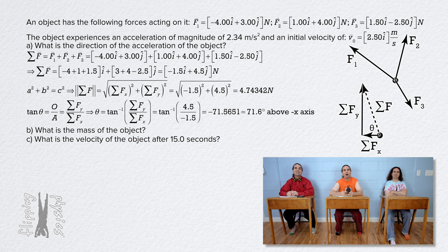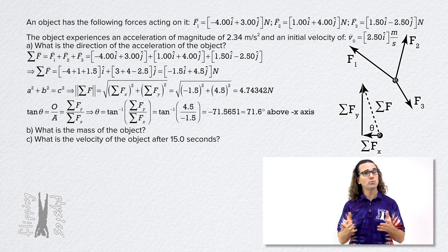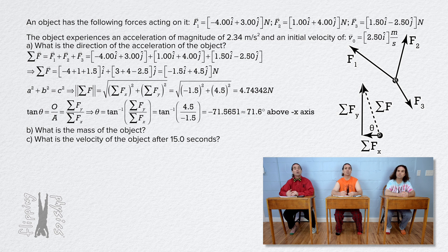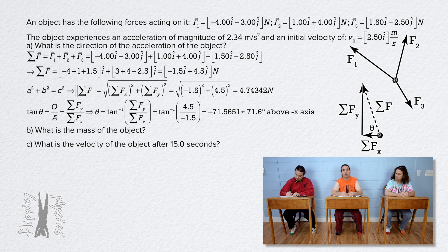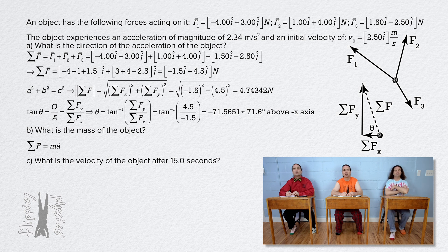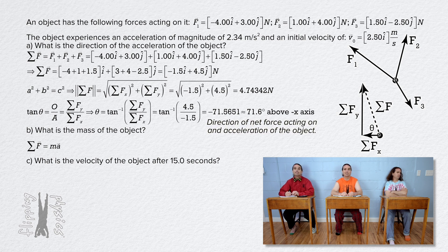But we have not answered any of the questions yet. This is all great information — how are we going to use it to answer the questions? We could use Newton's second law. Newton's second law states that net force equals mass times acceleration. Force and acceleration are both vectors and mass is a scalar, so the net force and the acceleration of the object are in the same direction. That means we already have the answer for Part A: the direction of the acceleration is 71.6 degrees above the negative x-axis.